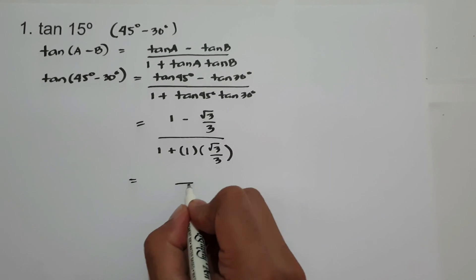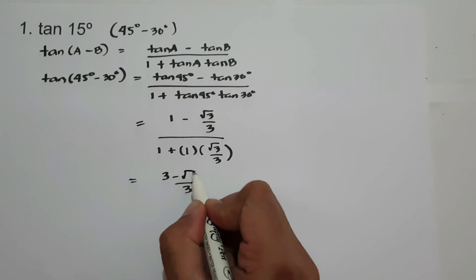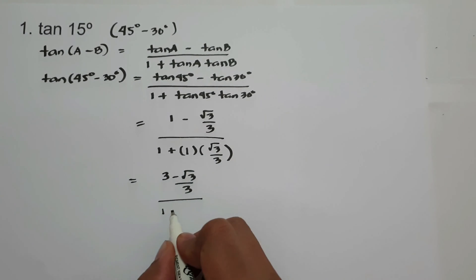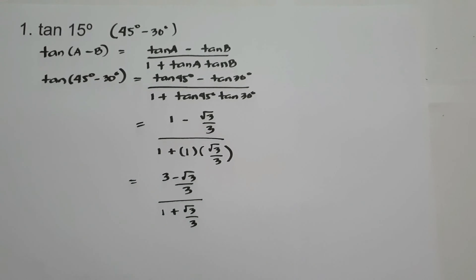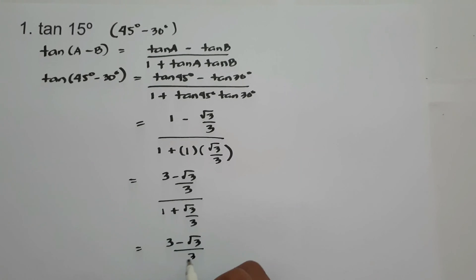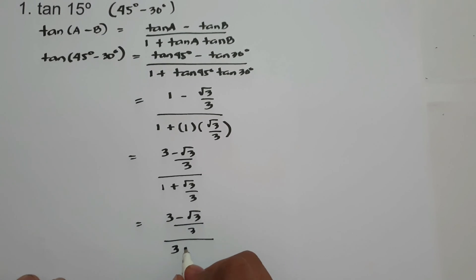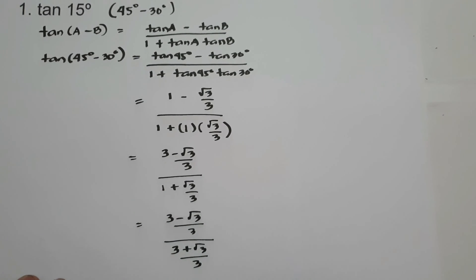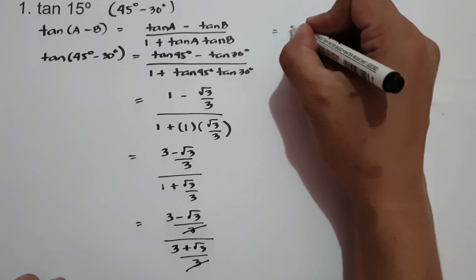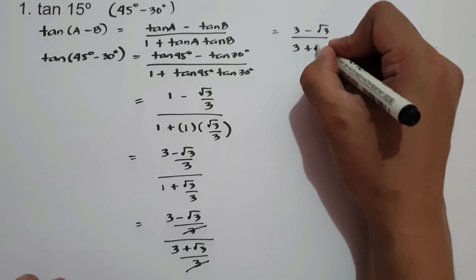Let's get a common denominator of 3. In the numerator: 3 times 1 is 3, minus √3. That gives us (3 - √3)/3. In the denominator: 3 times 1 plus 1 times √3/3, giving us (3 + √3)/3. After canceling the common factor of 3, we have (3 - √3) / (3 + √3).